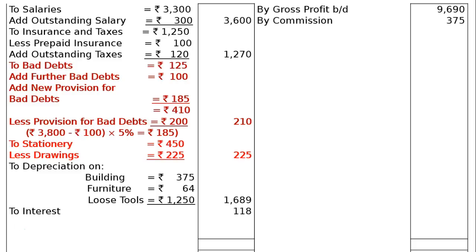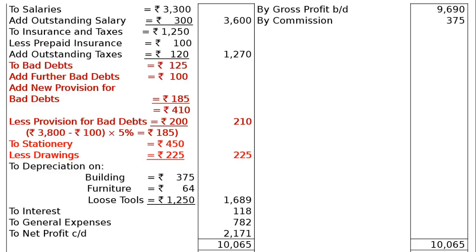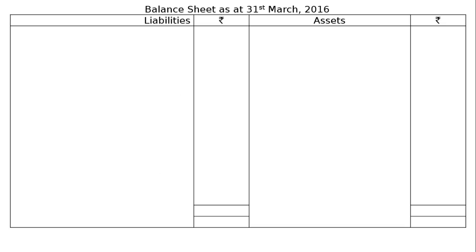Next is interest paid — interest charged by other companies — rupees 118. Then general or business expenses rupees 782. The credit side total is rupees 10,065. Writing it on the debit side and deducting all profit and loss account expenditures, the net profit carried down is rupees 2,171.